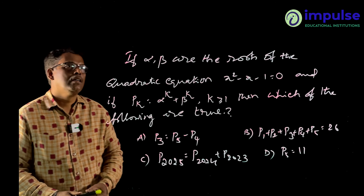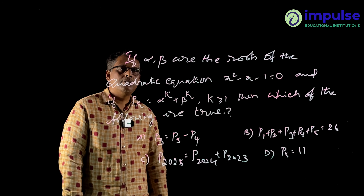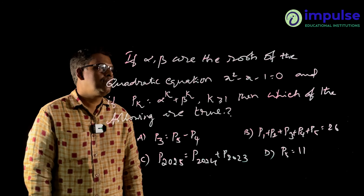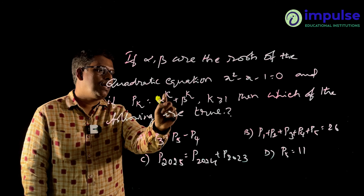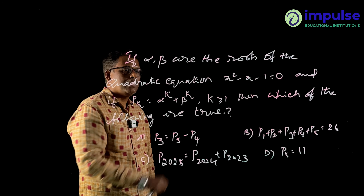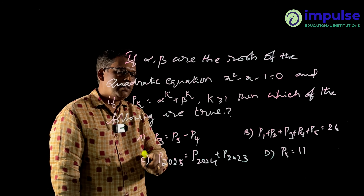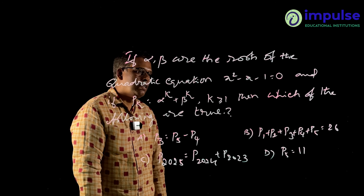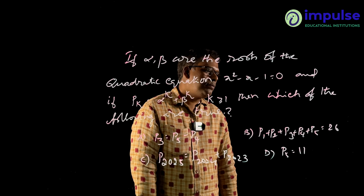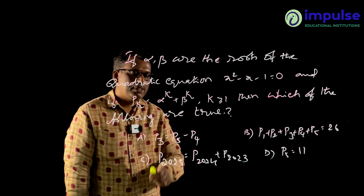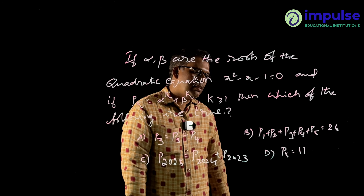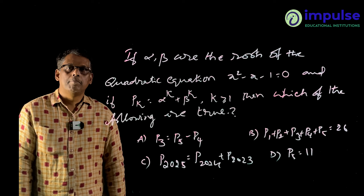Let's have a look at this question. If alpha and beta are the roots of the quadratic equation x² - x - 1 = 0, and moreover it is given that p_k = alpha^k + beta^k when k ≥ 1, then which of the following statements are true? Option A: p3 = p5 - p4. Option B: p1 + p2 + p3 + p4 + p5 = 26. Option C: p2025 = p2024 + p2023. Option D: p5 = 11.